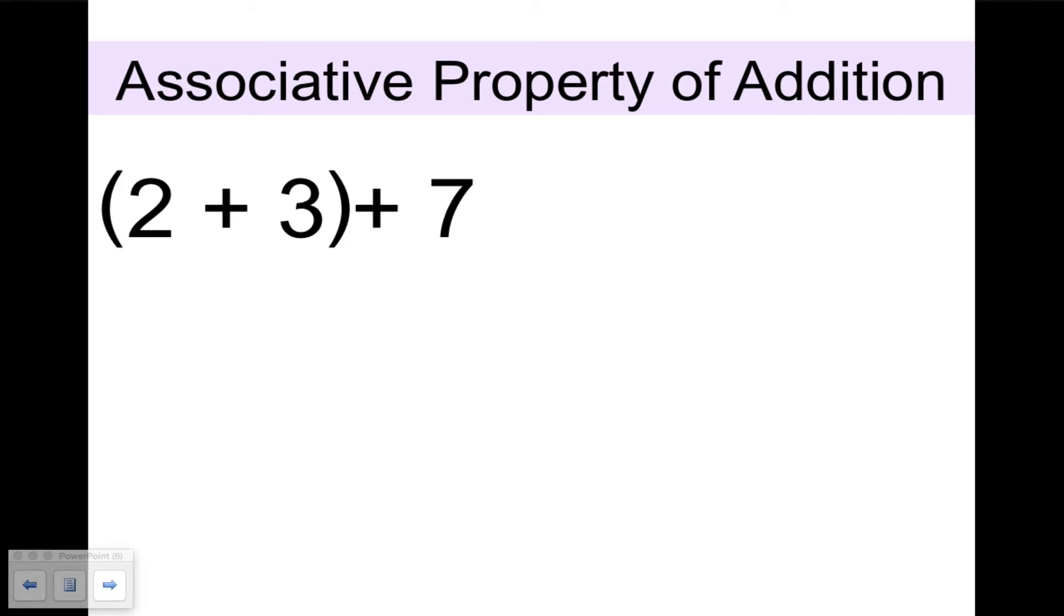Our next main property is the associative property, of which we're going to have addition and multiplication as well. Let's take a look at what's in the grouping symbols. We have 2 plus 3, which is 5, and 5 plus 7 is 12.